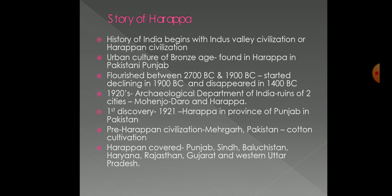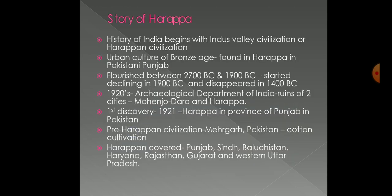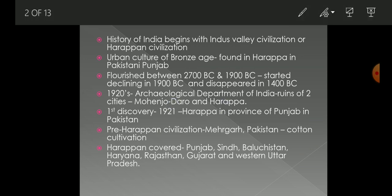First is the story of Harappa. The history of India begins with the Indus Valley Civilization or Harappan Civilization, which is the oldest civilization. During the urban culture of the Bronze Age, they found it in Harappa in Pakistani Punjab. It flourished between 2700 BC and 1900 BC and started declining in 1900 BC, totally disappearing in 1400 BC. In the 1920s, the Archaeological Department of India found the ruins of two cities: Mohenjodaro in Sindh and Harappa in Punjab.